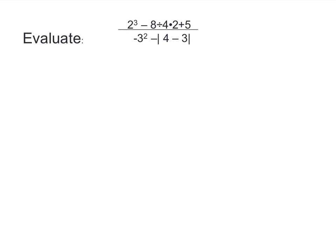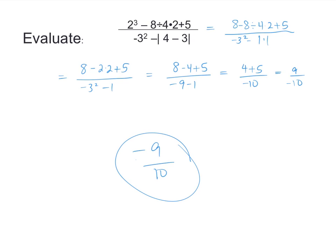Moving on, here's a more complicated one. Pause this video and see if you can do this problem on your own, then restart the video and check your work. You should have gotten negative nine tenths for your answer — you end up with a positive nine in the numerator and a negative ten in the denominator. Check over my work if you didn't get that.